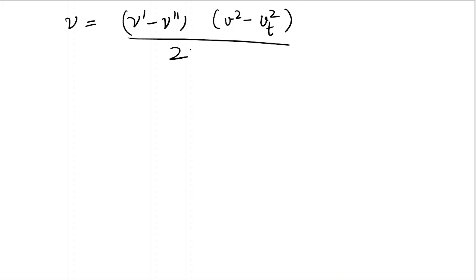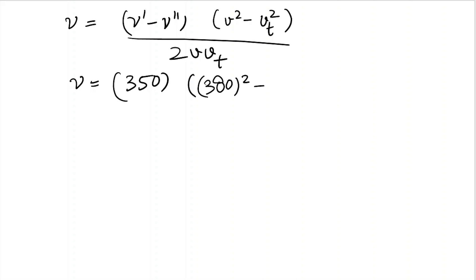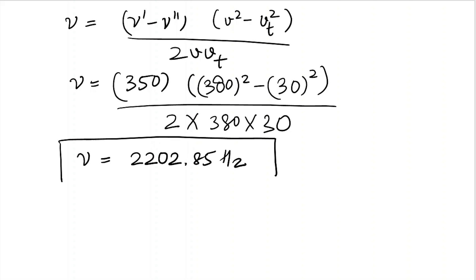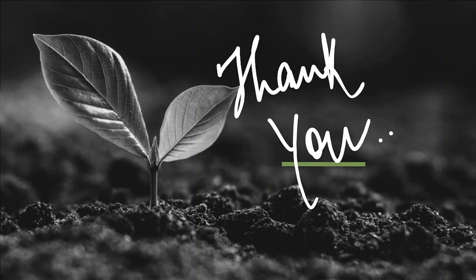Let's substitute all the values. The frequency difference is 350 Hz, v is 380 meters per second, and vt is 30 meters per second. So: mu equals 350 times (380 squared minus 30 squared) divided by (2 times 380 times 30). After solving, we get the actual frequency of the whistle as approximately 2202.85 Hz. This is the solution — if you have any doubts please write in the comment box, and if you found this video helpful please like, share, and subscribe to my channel. Thank you for watching.